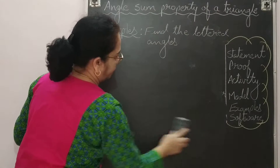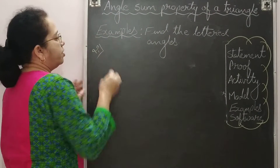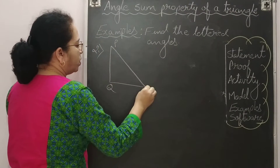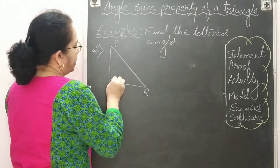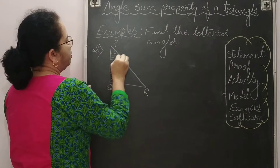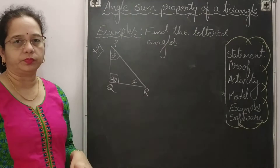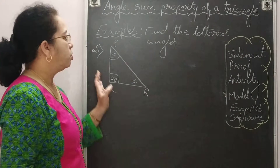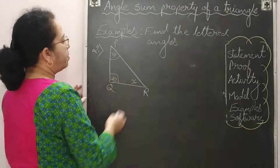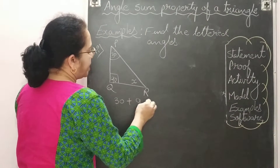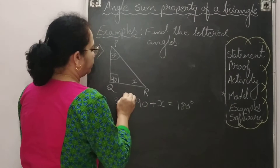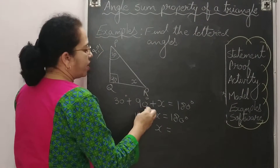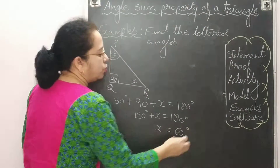Second example: a right-angled triangle PQR where angle P is 30 degrees and one angle is 90 degrees. Find X. By angle sum property: 30 + 90 + X = 180 degrees. Adding: 120 + X = 180. Shifting 120 to the right-hand side: X = 180 − 120 = 60 degrees. Note: in a right-angled triangle, if one angle is 90 degrees, the sum of the other two angles will be 90 degrees.